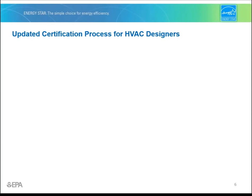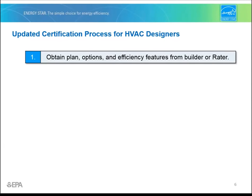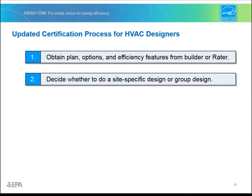Let's move on to the updated process for certifying a home and the role you'll play. First, you'll obtain the relevant plan, options, and efficiency features from the builder or home energy rater. Second, you'll either decide to do a site-specific design or group design. For group designs, we've created a free optional calculator to help you rapidly group options and elevations into compliant groups.